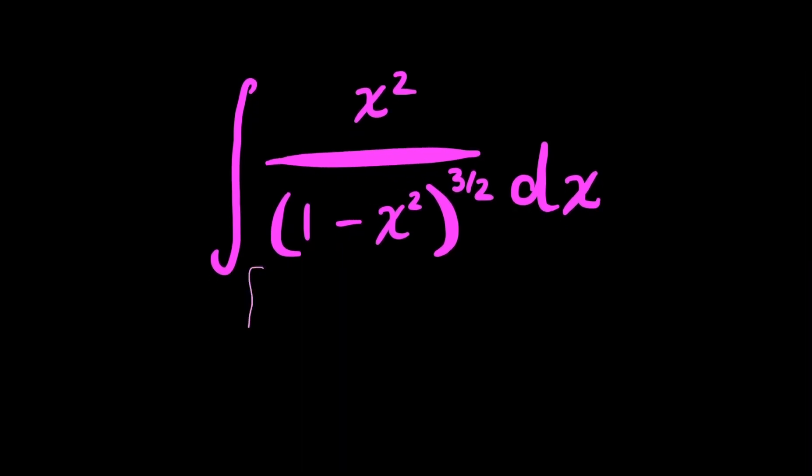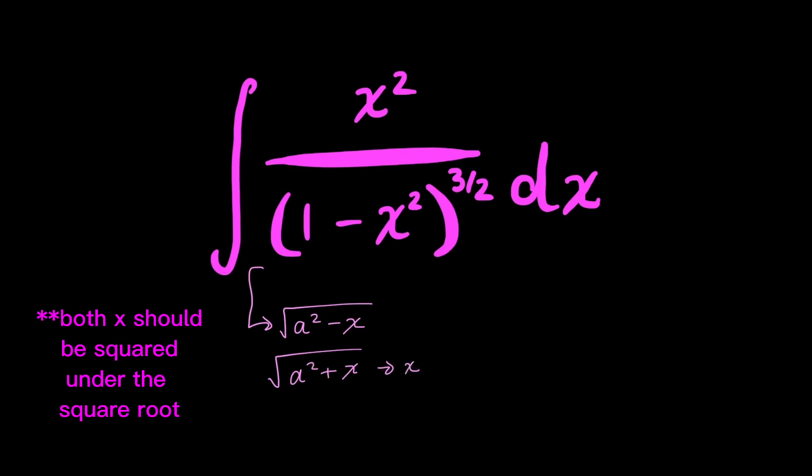Because in my denominator, I know that if I have something that looks like a squared minus x or a squared plus x, I would use trig substitution, where x would be equal to a tan theta in one case, and x would be equal to a sine theta in this case. And we have that here in my denominator.